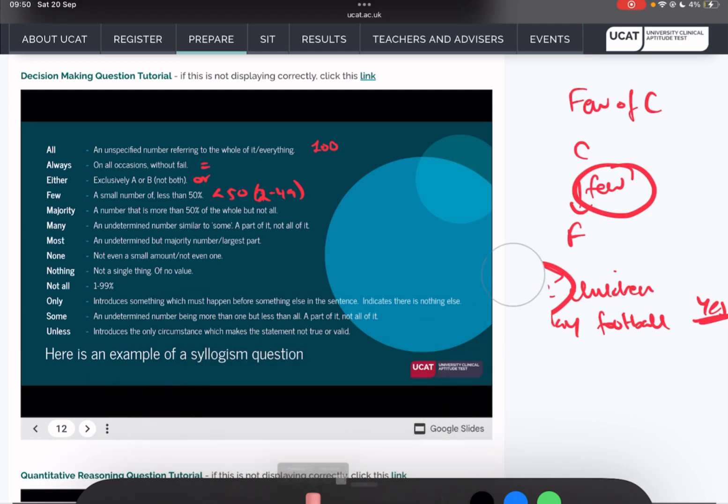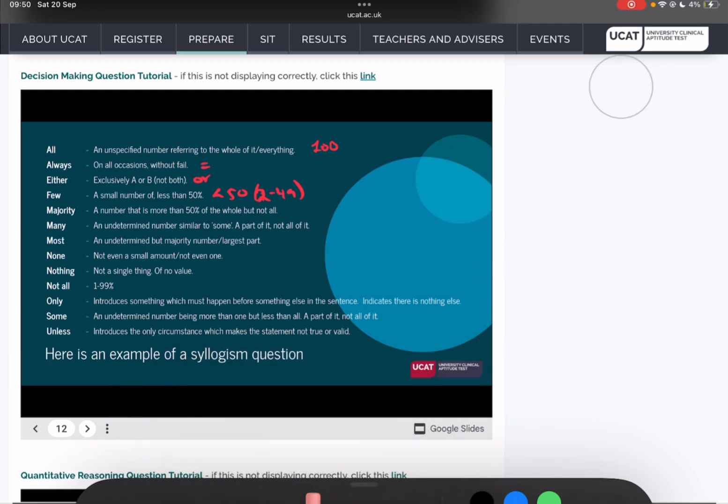Majority. A number that is more than 50% of the whole, but not all. This one's fairly straightforward, it's just 51 to 99. Majority also just basically means the same as most, exactly the same. So if it tells you, for example, the majority of the towns were small, then you can just write most here. Even if I see majority in the word, sometimes I'll just switch it out for most.